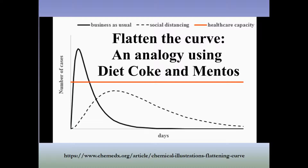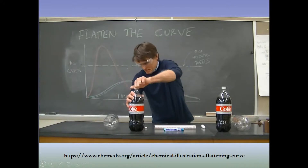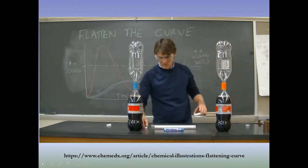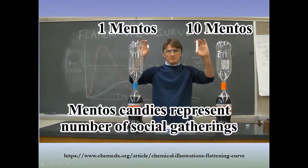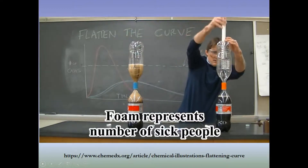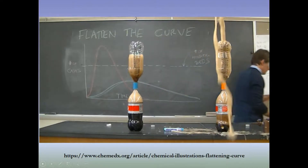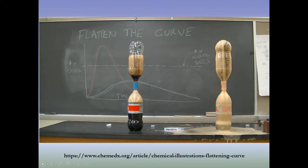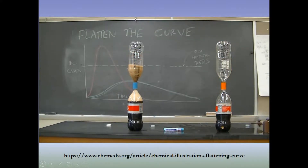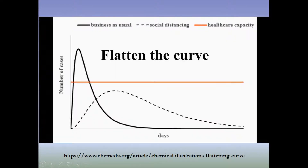In this video, the bottles represent health care capacity, the Mentos represent the number of social buildings that are open — stores, churches, and so on — and the foam represents the number of sick people. Watching the kinetics of foam production mimics the kinetics of sick people produced. With a fast outbreak, the virus moves through the population quickly, and flattening the curve requires a much longer, more disciplined approach — keeping people socially distanced for a very long period of time.